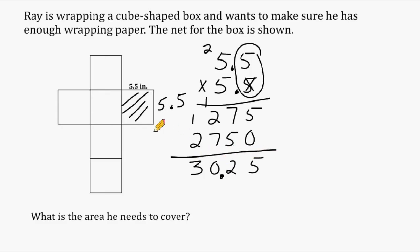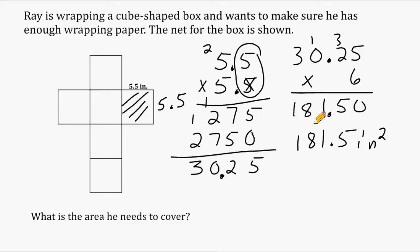Now, 30 and a quarter is the area of just one of the surfaces. And all 6 surfaces are congruent. So we're going to take 30.25 and multiply that by 6. 6 times 5 is 30. 2 times 6 is 12 plus the 3 we carried is 15. 6 times 0 is 0 plus 1 is 1, and 6 times 3 is 18. Our decimal goes right here in this position. Ray would need 181.5 or 5 tenths square inches of wrapping paper to completely cover all 6 surfaces of the cube shaped box.